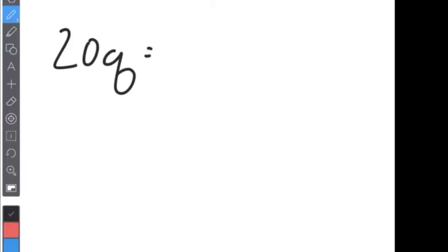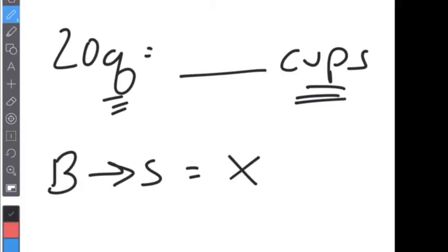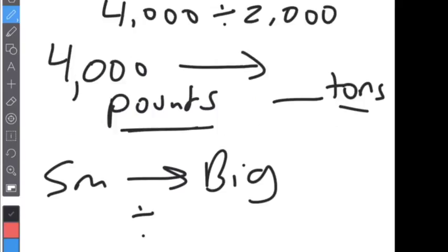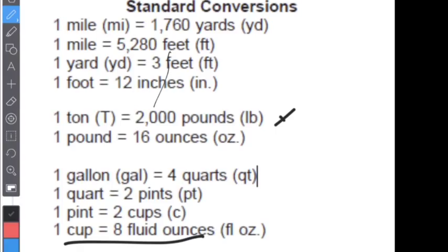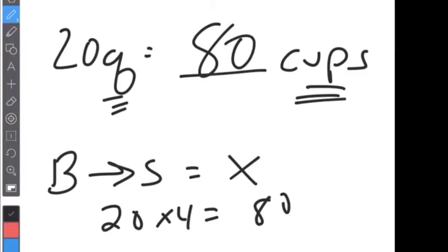Let's try one more. Say you have 20 quarts and want to figure out how many cups that is. We're going from a bigger unit to a smaller unit — big to small — so I know I need to multiply. There are two cups in a pint and two pints in a quart, so there are four cups in a quart. Twenty times four equals 80, so the answer is 80 cups.